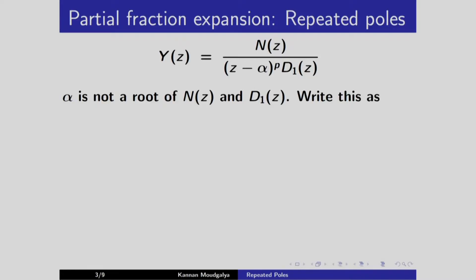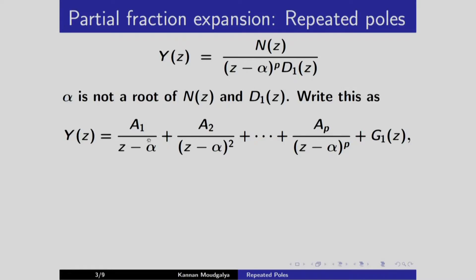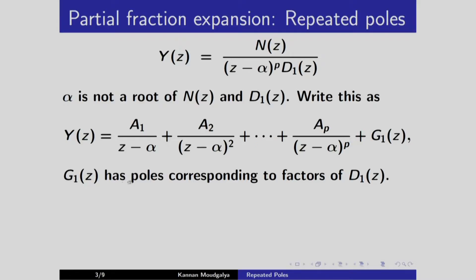We write this in partial fractions as a1 over (z minus alpha), all the way up to a_p over (z minus alpha)^p, plus g1(z), where g1(z) has poles corresponding to the factors of d1(z). So d1(z) gives rise to g1(z).